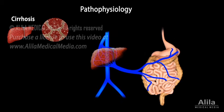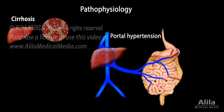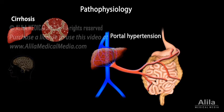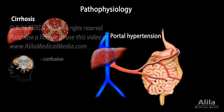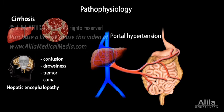Scarring of liver tissue also obstructs blood flow, causing high blood pressure in the portal vein that brings blood from the intestine to the liver. As liver functions decline, toxins that are normally removed by the liver can now reach the general circulation and pass into the brain, producing symptoms such as confusion, drowsiness, tremor, or even coma, in a condition known as hepatic encephalopathy.